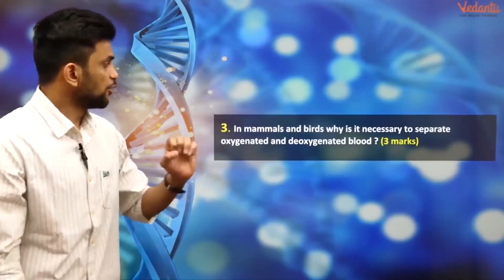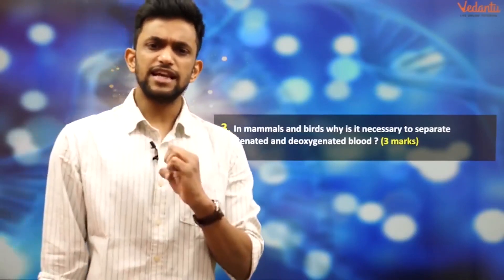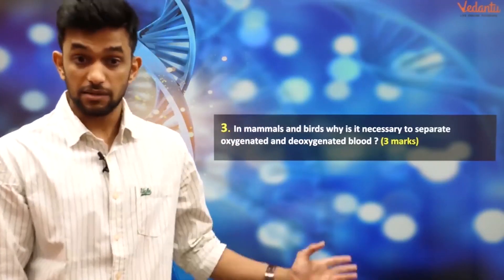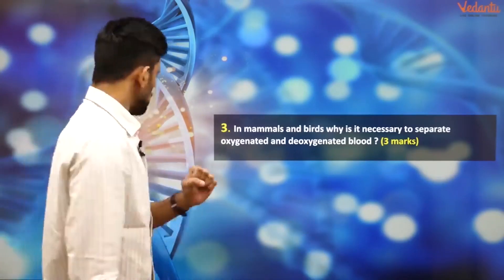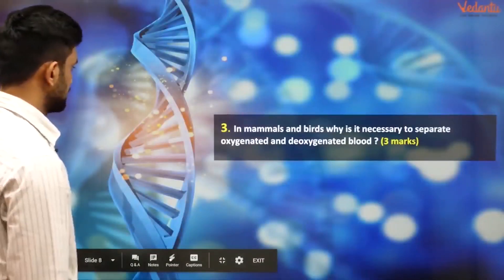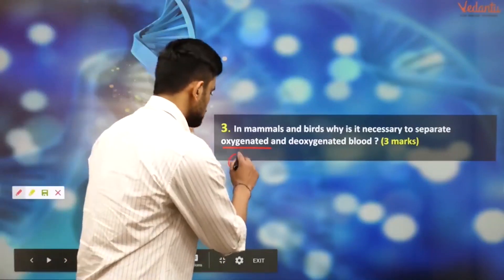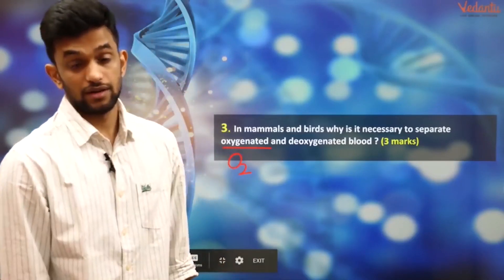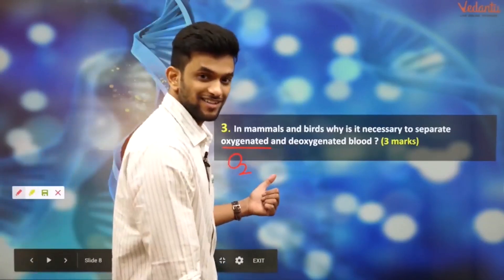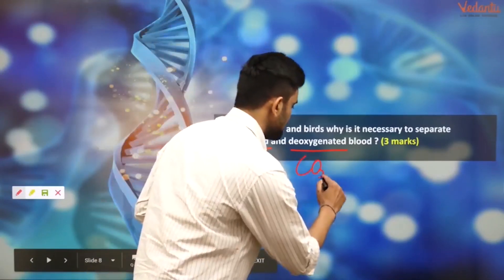This is the third question: in mammals and birds, why is it necessary to separate oxygenated and deoxygenated blood? It's a three-marker question. Oxygenated blood is oxygen-rich blood, while deoxygenated blood is oxygen-deficient and carbon dioxide-rich blood.